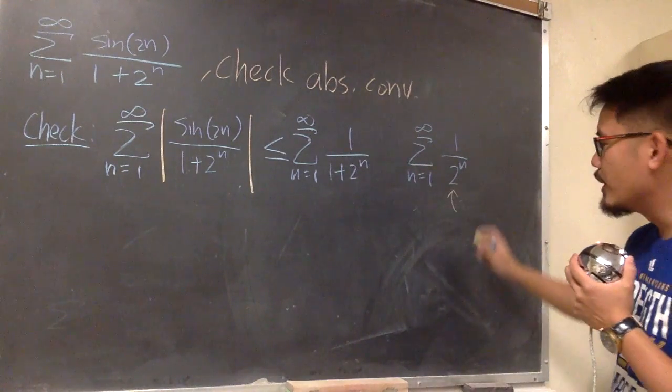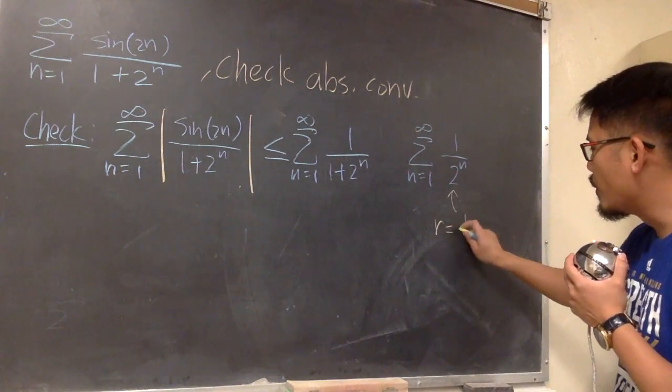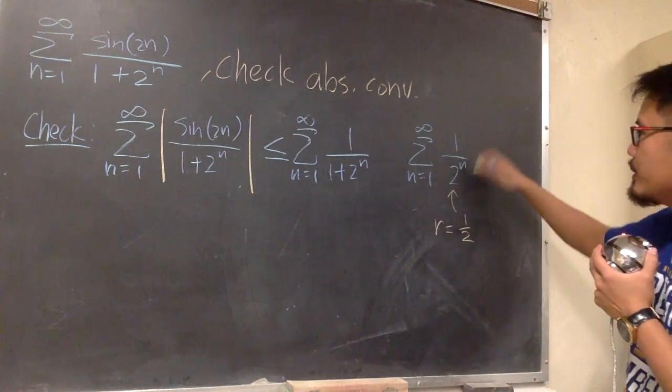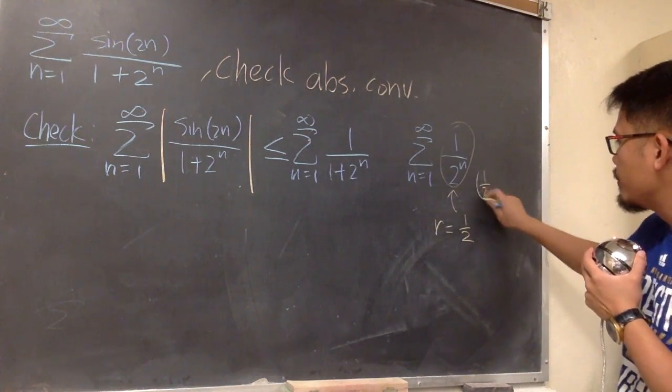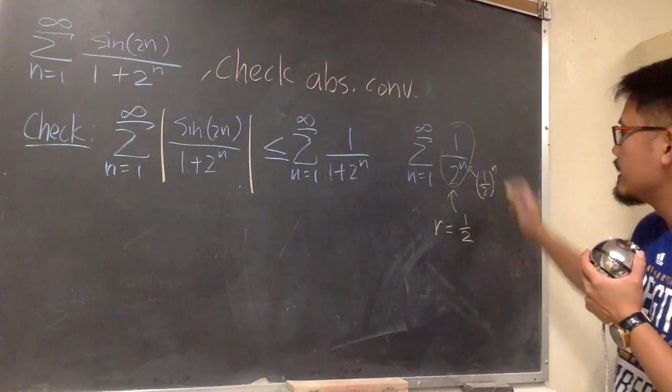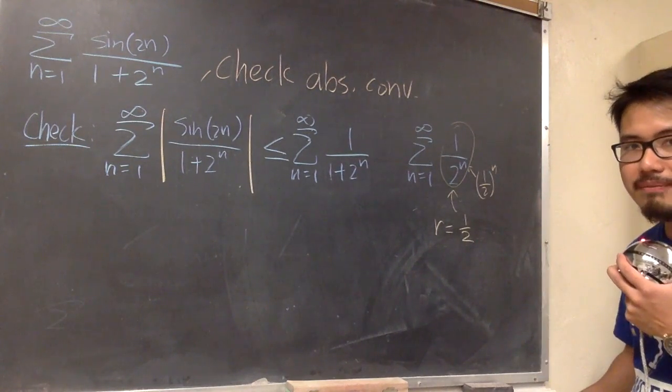Because this is a geometric series, we know r is equal to 1 half. You can look at this as 1 over 2 to the nth power. So r is 1 half.